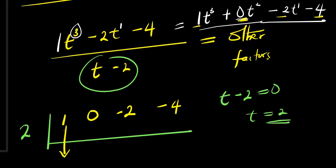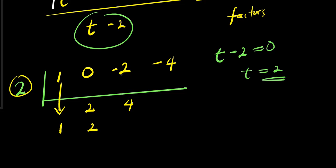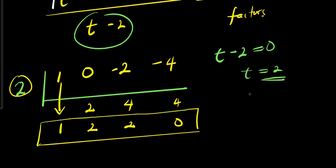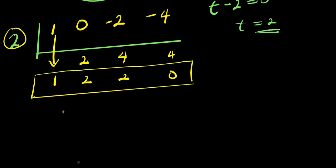I bring down the 1. Then multiply 2 times 1 to get 2, add 0 plus 2 to get 2. Multiply 2 times 2 to get 4, add negative 2 plus 4 to get 2. Multiply 2 times 2 to get 4, add negative 4 plus 4 to get 0. So the resulting coefficients are 1, 2, 2 with remainder 0. Reducing the power by 1, this gives t squared plus 2t plus 2.